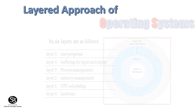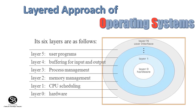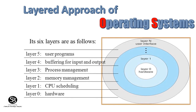Layered Approach of Operating Systems: It has six layers. Layer 0 is the hardware. Layer 1 is CPU scheduling. Layer 2 is memory management. Layer 3 is process management. Layer 4 is buffering for input and output. Layer 5 is user programs.